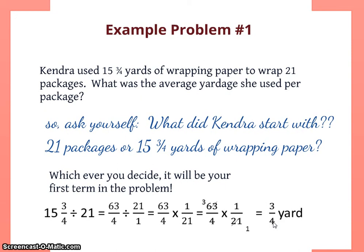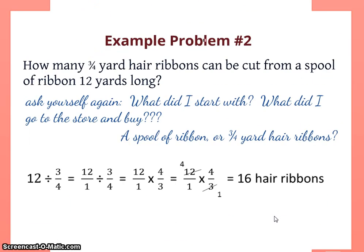So this tells me that she's gonna end up using 3 quarters yard of wrapping paper for each package. That answer makes sense because I have 21 packages. 21 is a larger number than 15, so I'm thinking that it's gonna be a number smaller than 1 as my answer, and it is. 3 quarters is a number smaller than 1.